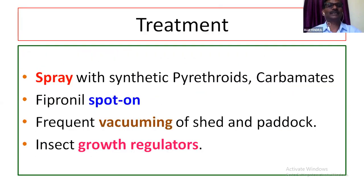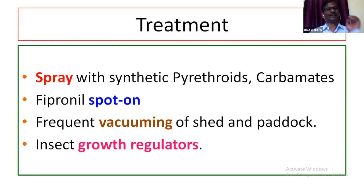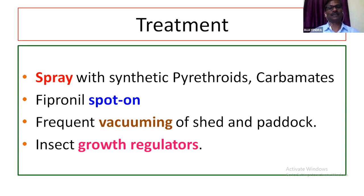For treatment of fleas, spray with synthetic pyrethroids or carbamates, fipronil as a spot-on. Most importantly, clean the premises. By spraying, dipping, or systemic administration of insecticide, we can eliminate adult fleas. But the developing stages, which are plenty in number in the surrounding premises, if not destroyed, will again cause heavy re-infestation. So along with the treatment of animals, we must ensure the surrounding is free from developing stages of flea.